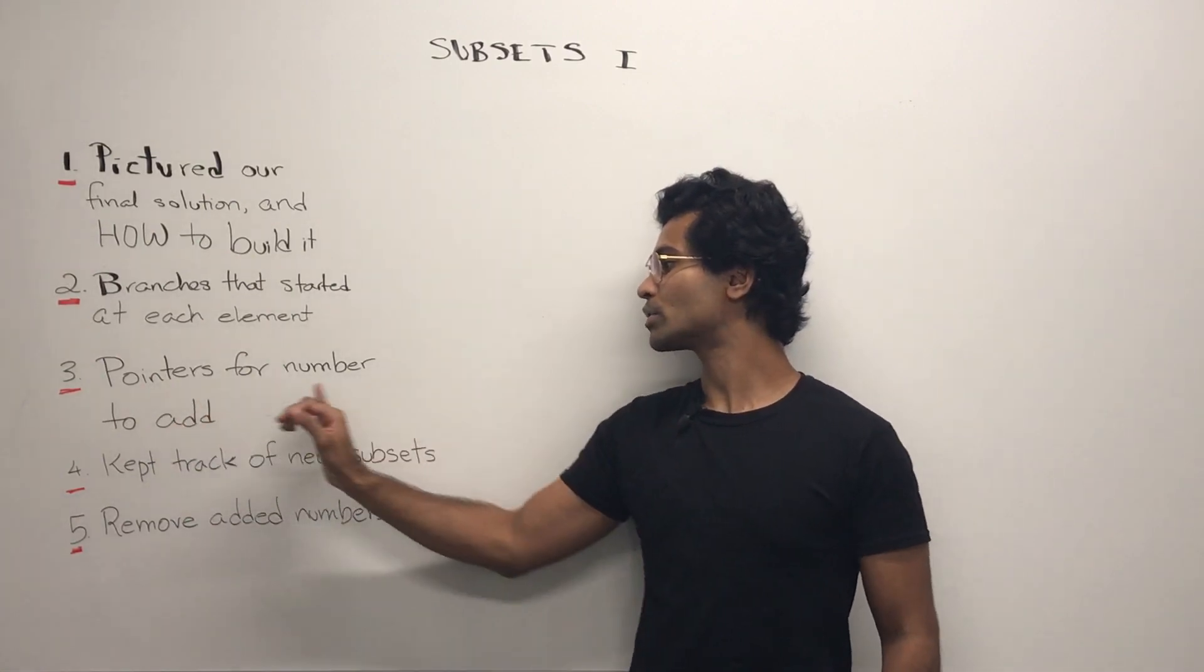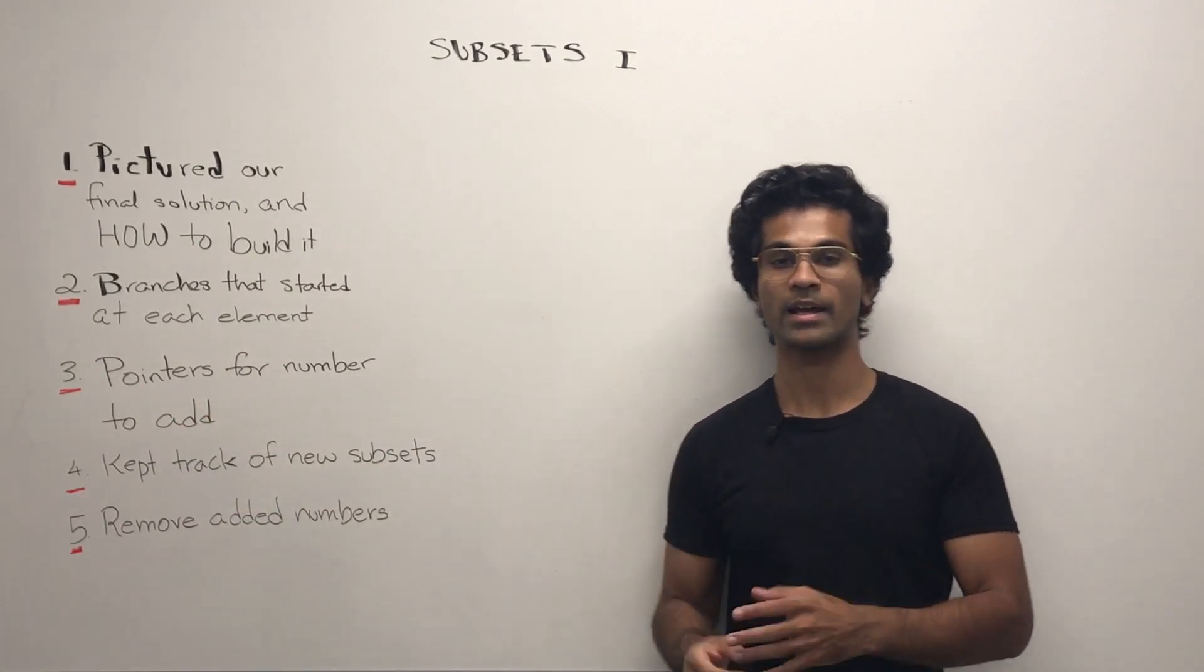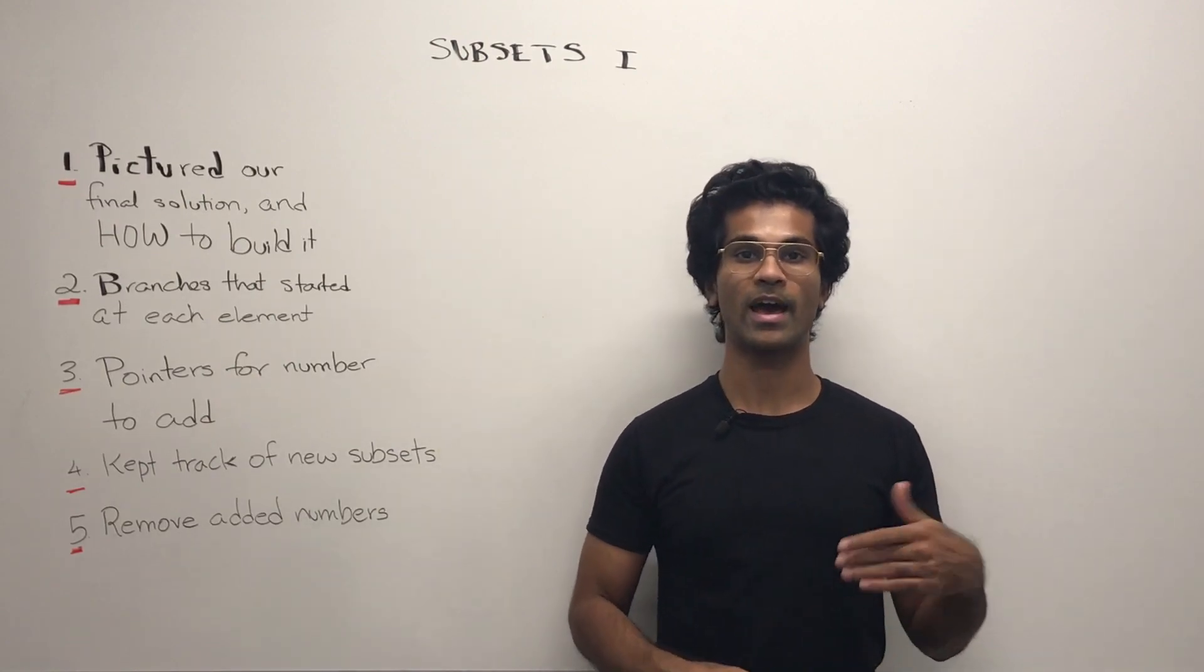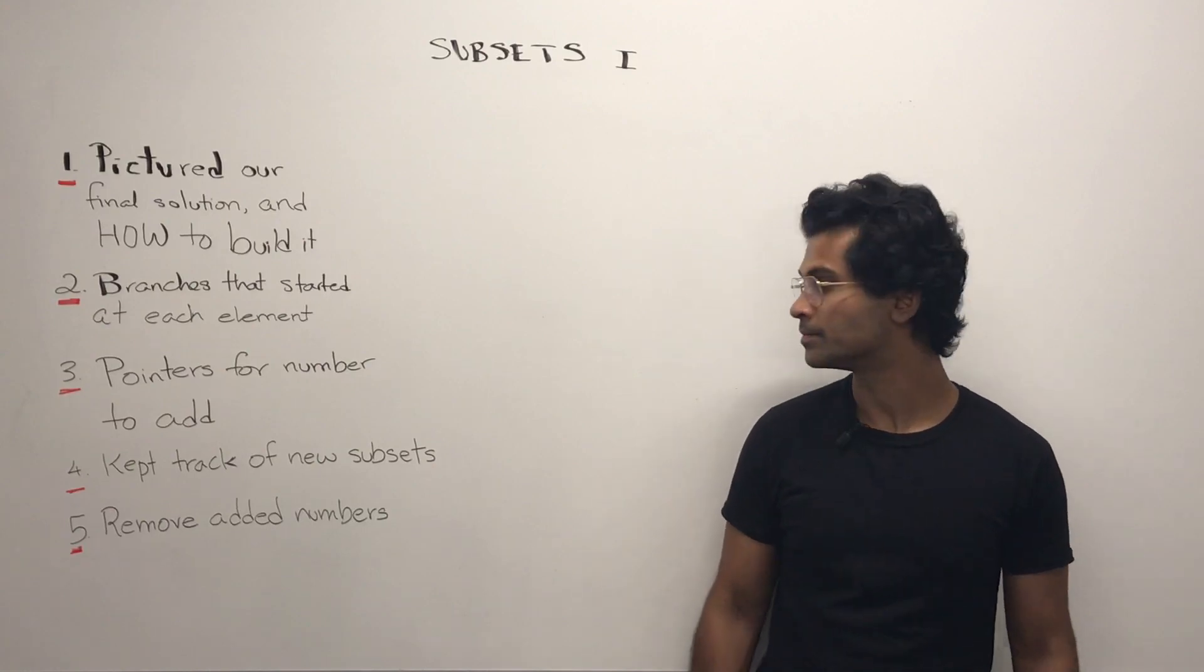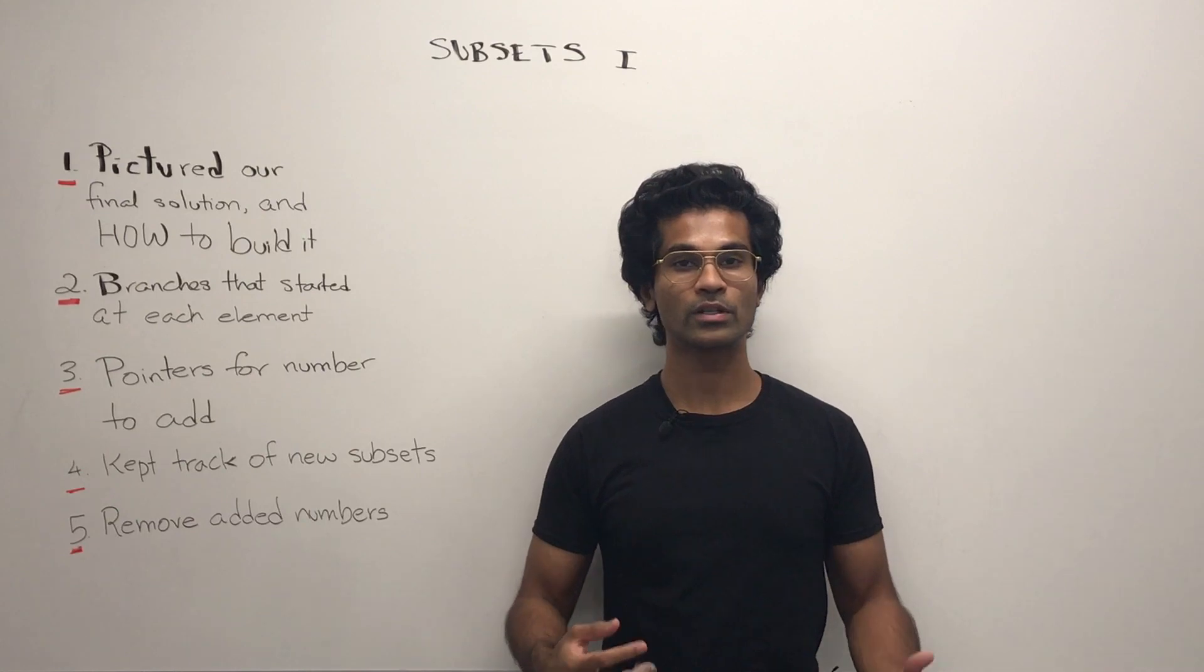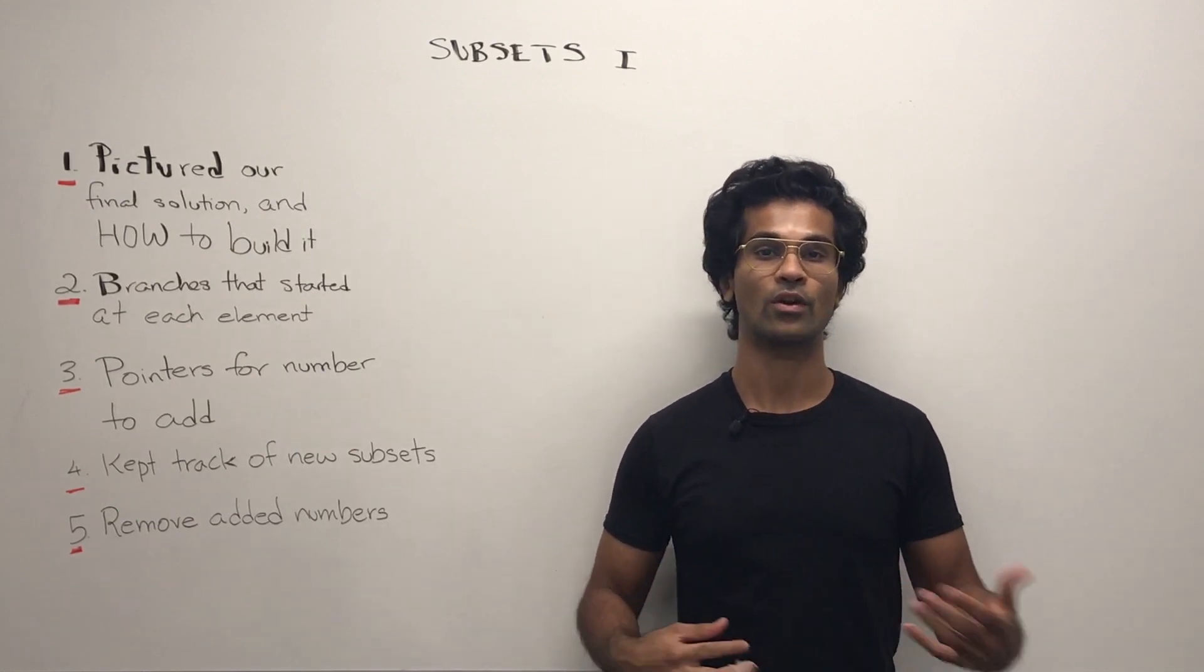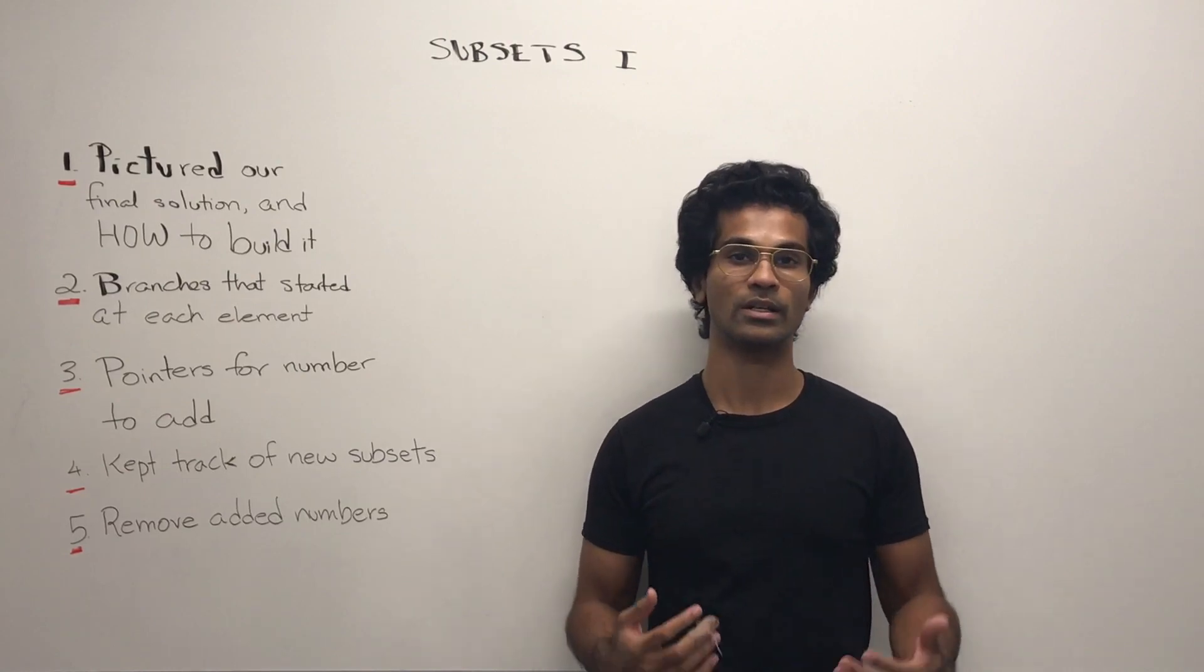Next, pointers for number to add. If you recall, in each recursive stack, there was one new number that we added and we collected that as part of our final answer. Next, we kept track of each new subset. So as long as we didn't hit some sort of return condition, we kept track of every new unique generated subset.